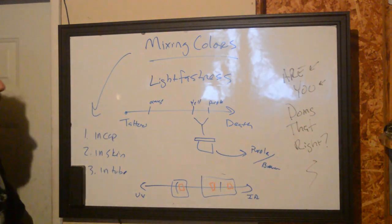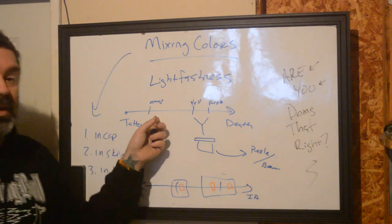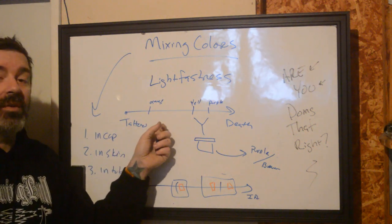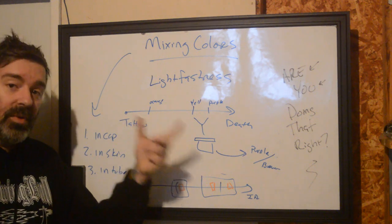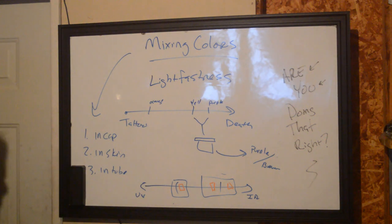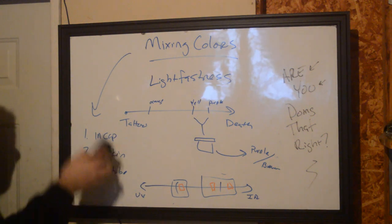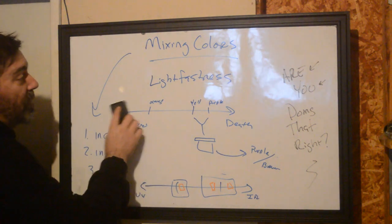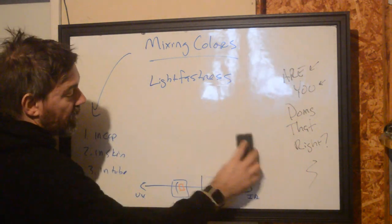If we're mixing orange and yellow together to make like a creamsicle color, that orange is going to fade out very quickly. We're going to end up with a very faint yellow three to five years down the road. So the light fastness should automatically start cueing you into how these things are going to be mixed. It doesn't matter if it's in cap, in skin, or in tube—the light fastness is totally going to dictate what those things are going to look like long term.